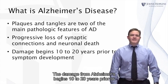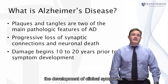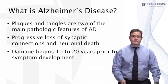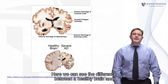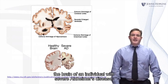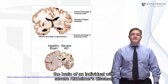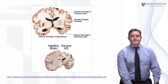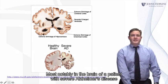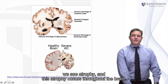Plaques and tangles are followed by the progressive loss of connections between neurons, as well as the death of neurons, which ultimately results in atrophy of the brain. The damage from Alzheimer's begins 10 to 20 years prior to the development of clinical symptoms. Here, we can see the difference between a healthy brain and the brain of an individual with severe Alzheimer's disease. Most notably, we see atrophy, and this atrophy occurs throughout the brain.